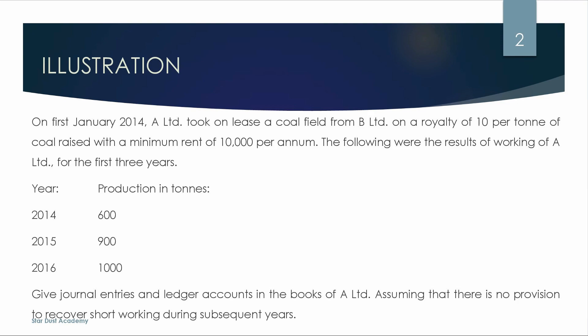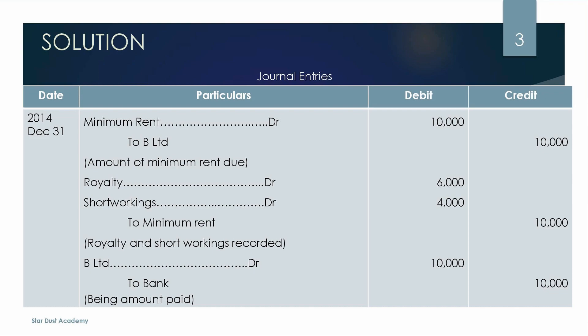There is no provision to recover short workings during subsequent years. We will discuss two methods. The first method uses the Minimum Rent account. The second method is without the Minimum Rent account — just direct journal entries. You can use any method for the exam.